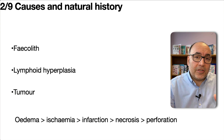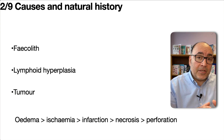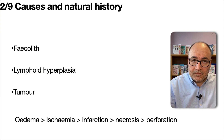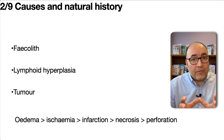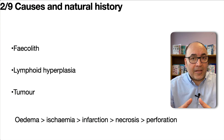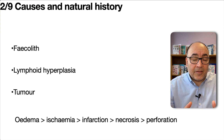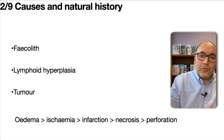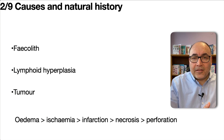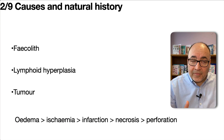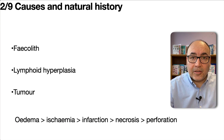The natural history usually starts with oedema, then compromised blood supply and ischaemia, which leads to infarction, then necrosis, tissue death, and gangrene, then perforation and all the bad consequences like faecal contamination, peritonitis, and very severe outcomes for the patient.